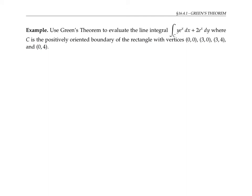So let's use Green's theorem to evaluate a line integral. The line integral given here, where C is the positively oriented boundary of the rectangle with vertices at (0,0), (3,0), (3,4), and (0,4). So that's this rectangle, and positively oriented means we go in this direction. I'll write this as the union of four curves: four smooth curves C1, C2, C3, and C4.